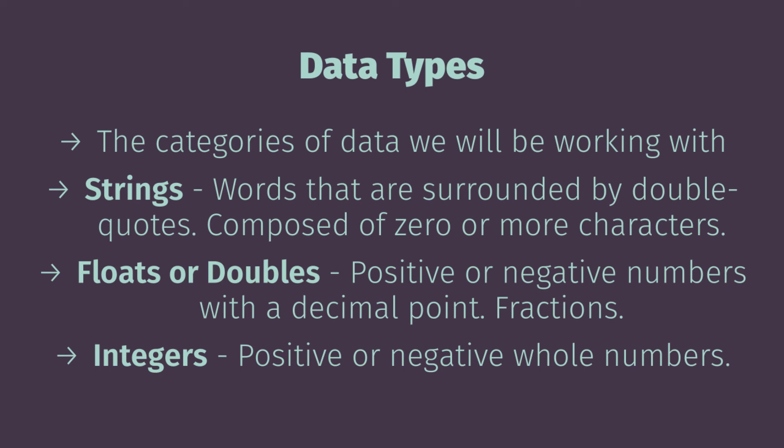Some data types that we will run into constantly this semester: strings — we've already seen a bunch of them. These are words. They are surrounded by double quotes. They can be composed of zero or more characters. So any word like the letter A or my name — these are strings. Whenever you see words with double quotes in them, we're going to refer to that category of data as a string.